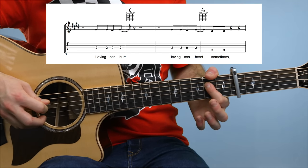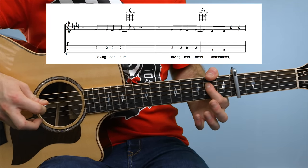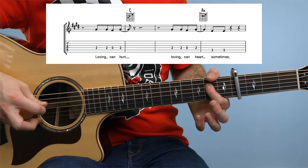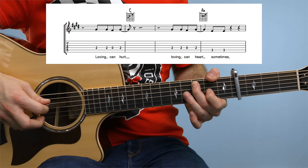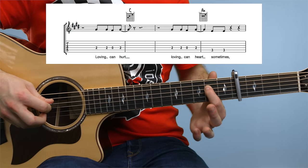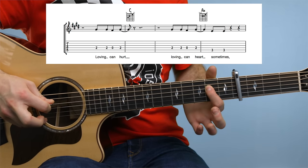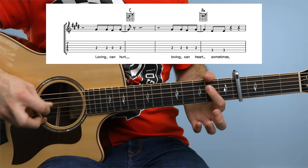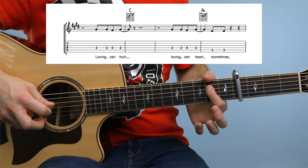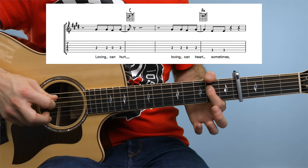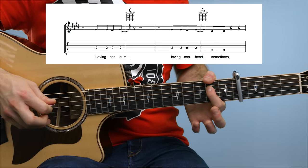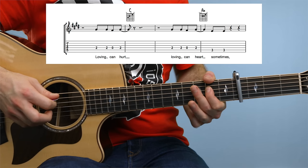The first phrase of the verse section goes like this. On the fourth string, it's 2-2-0-2, repeated again. Then double 3 on the fifth string.